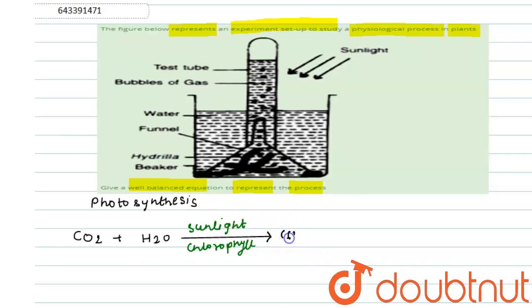food, that is C6H12O6, plus oxygen gas as a byproduct. So this is our equation.